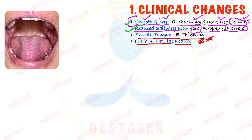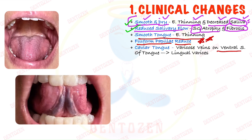Another important finding seen on the tongue is on its ventral surface. In edentulous patients, when you ask the patient to raise the tongue, you can see enlarged, varicose veins on the ventral surface — these are called lingual varices. This type of appearance on the tongue is referred to as lingual varices and is a normal age change. This can be an important viva question.